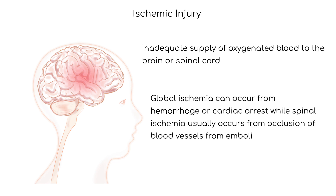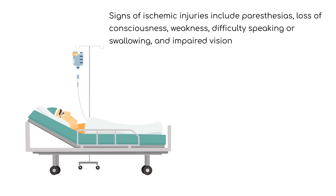Ischemic injuries to the brain will manifest on the contralateral, or opposite, side of the body. Signs of ischemic injuries include paresthesias, loss of consciousness, weakness, difficulty speaking or swallowing, and impaired vision.